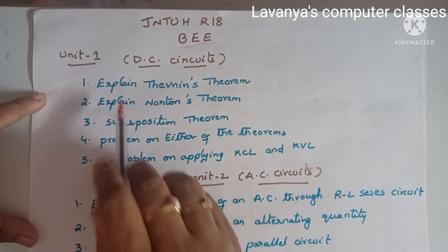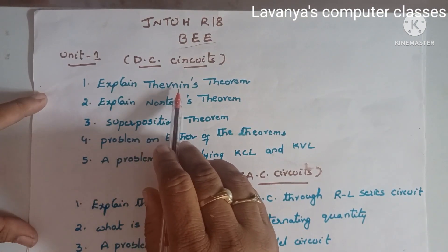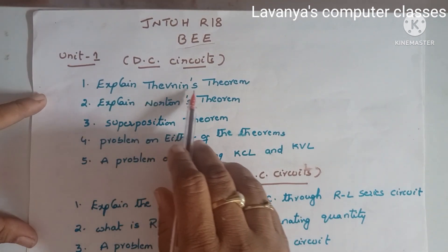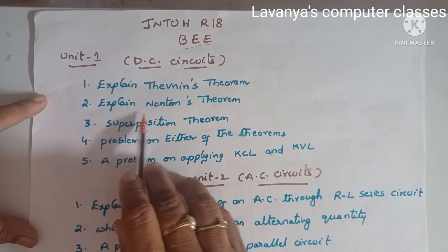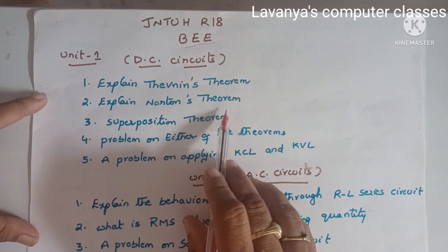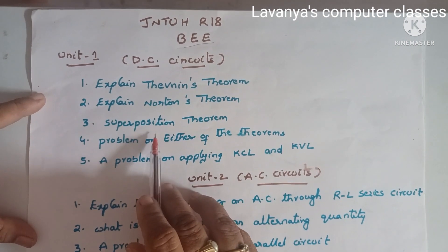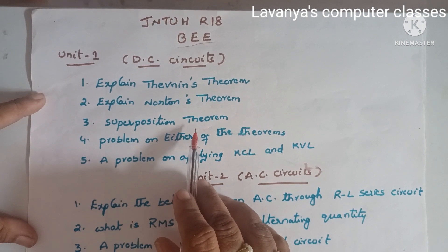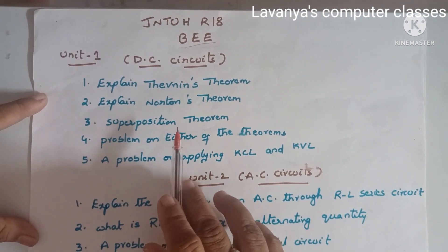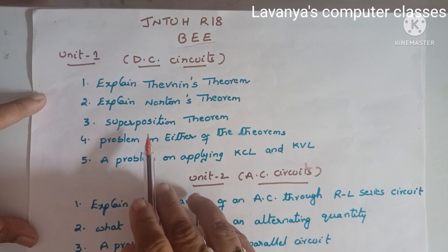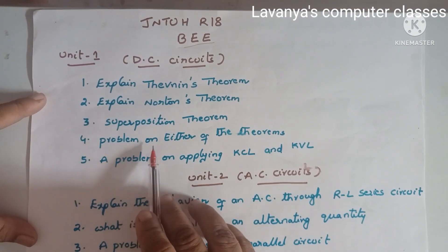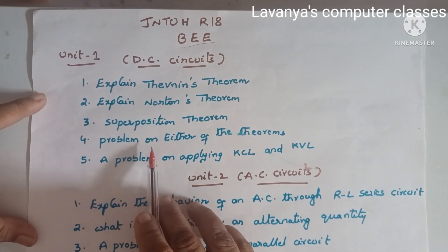In Unit 1, the very important questions are all the theorems. First one is Thevenin's theorem, second one is Norton's theorem, third one is superposition theorem — a very, very important question. After that, all the problems on either of these theorems.